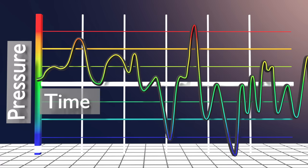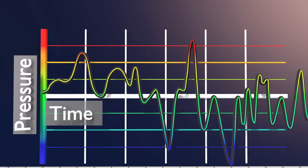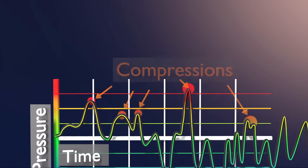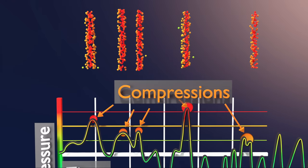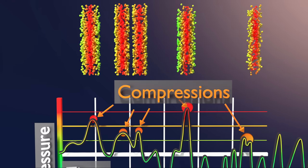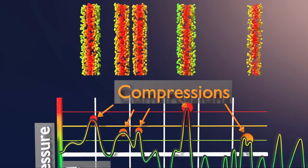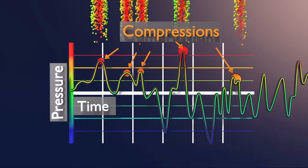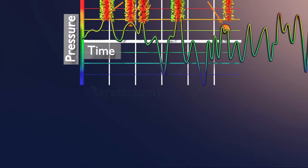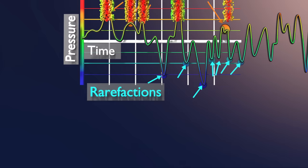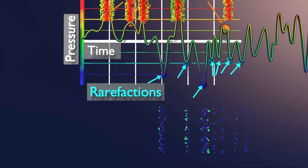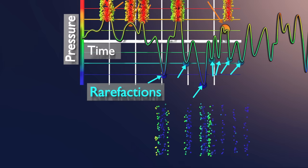The vertical axis is pressure, or the amount of force the particles bounce into one another. The horizontal axis is time. These high points in the waveform are called compressions, and they are where the particles are compressed and bouncing around a lot and thus have a higher pressure. The low points in the waveform are called rarefactions, and they are where the air particles are more spread out and not bouncing around as much, and thus have a lower pressure.